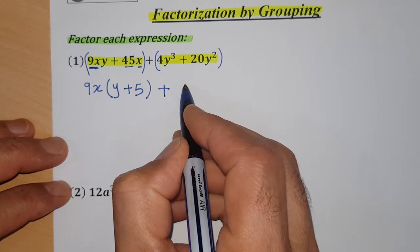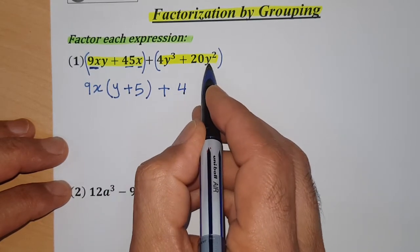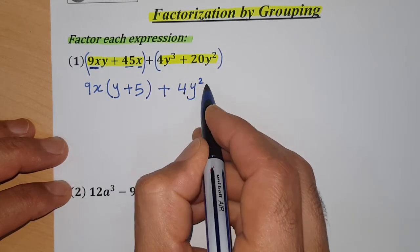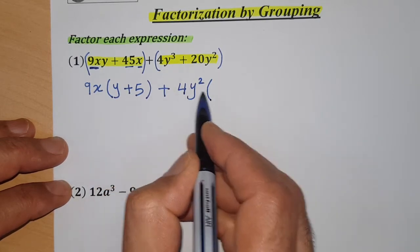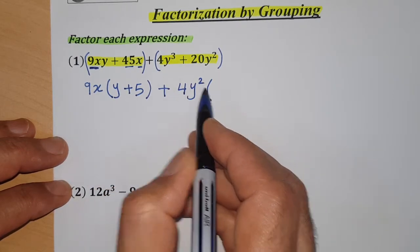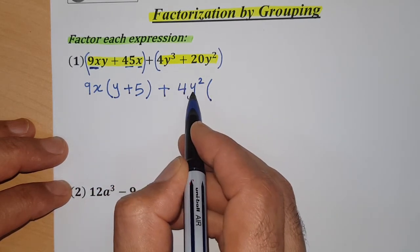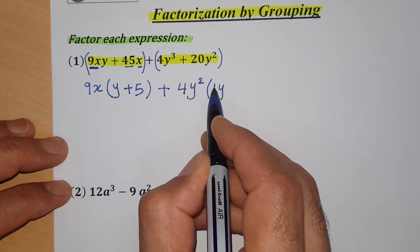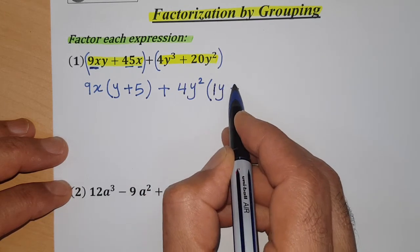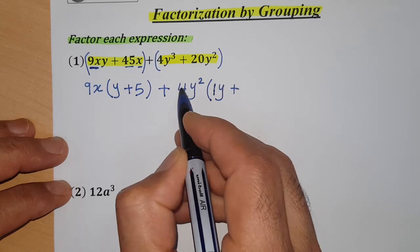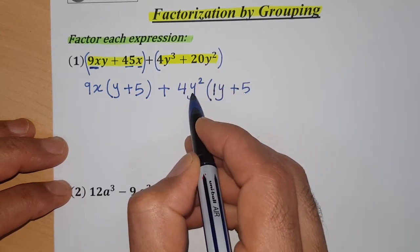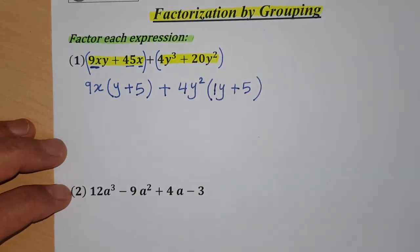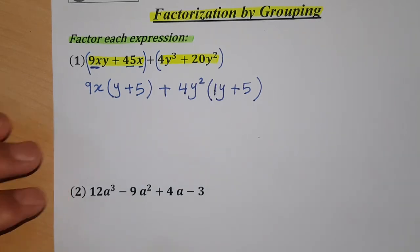For the second group, 4xy² and 20y², the highest common factor is y². Divide: 4 divided by 4 is 1 — no need to write it. y³ divided by y² is y. Plus 20 divided by 4 is 5, and y² over y² is 1. Done with the second group.